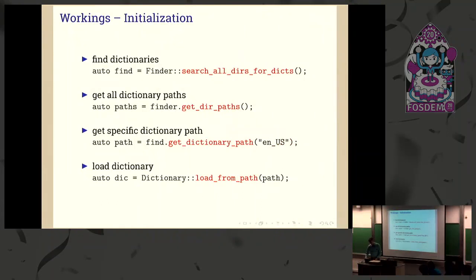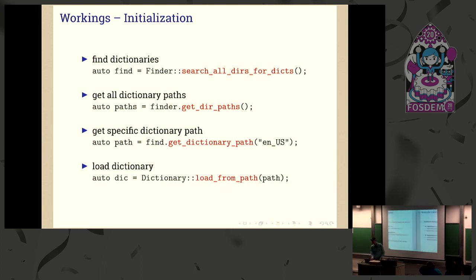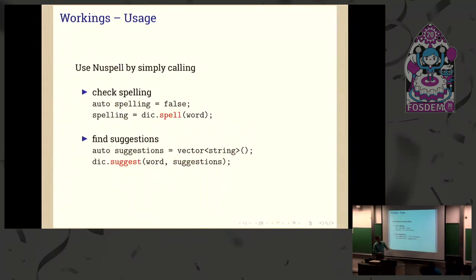If you want to use this library, it's very straightforward. The API is compatible with how HunSpell does it. There are some helper methods to see what dictionaries you have installed on your system, get the path of specific dictionaries, load one, and then you're all set to do some spell checking. You just pass the word in, you get a boolean out, and if you have a vector of strings, you can have it filled with suggestions. So if you're afraid of implementing spell checking in your software, don't be — just have a go.